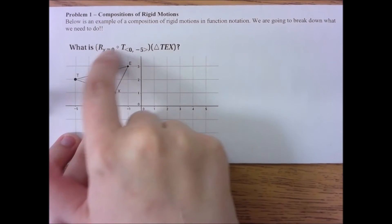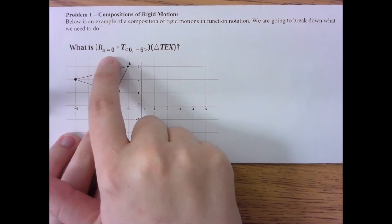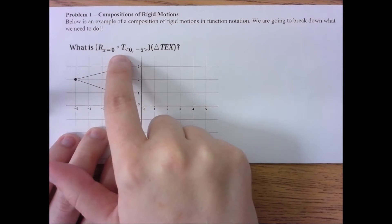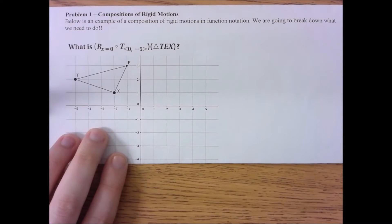So, this is saying that we actually do this transformation second, and we do this one first. So, I'm going to read this again, see if you catch a certain word in there. Reflection over the y-axis after a translation five units down. So let's go ahead and break that down.